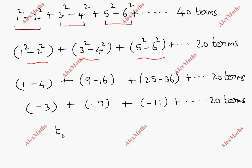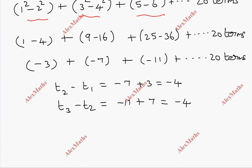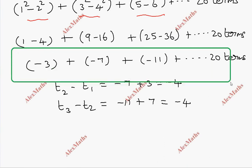Term 2 minus term 1: minus 7 minus minus 3 equals minus 4. Term 3 minus term 2: minus 11 minus minus 7, plus 7, equals minus 4. Common difference is the same, so this series is an AP.